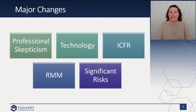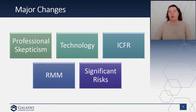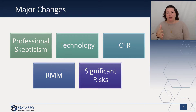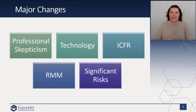For significant risks, the definition is going to change. Significant risk today talks about the response — it requires special audit consideration. Here, we're actually going to focus on the assessment of the risk. Those are going to be risks at the upper end of the inherent risk spectrum. We talk about a spectrum of inherent risk, and significant risks are just those high up at the upper end of the inherent risk spectrum based on the factors being considered. Instead of talking about the response, we're talking about the actual risk.